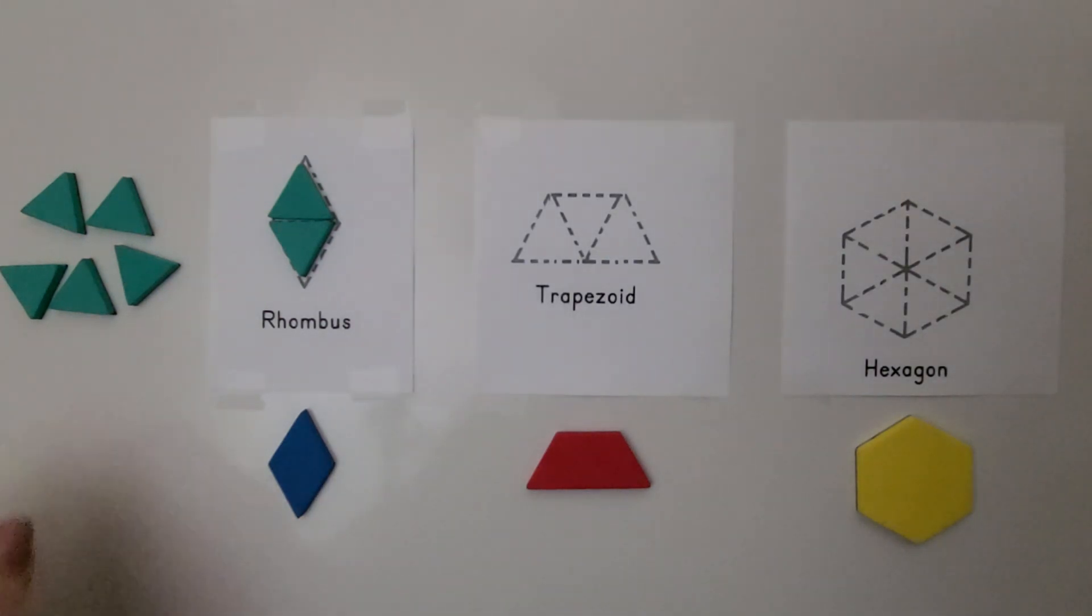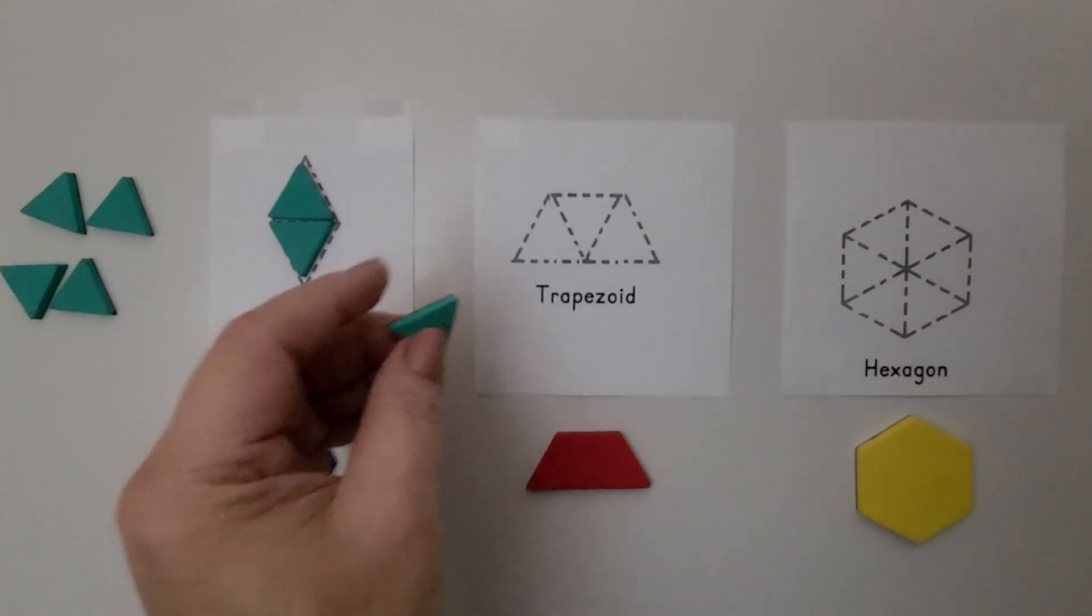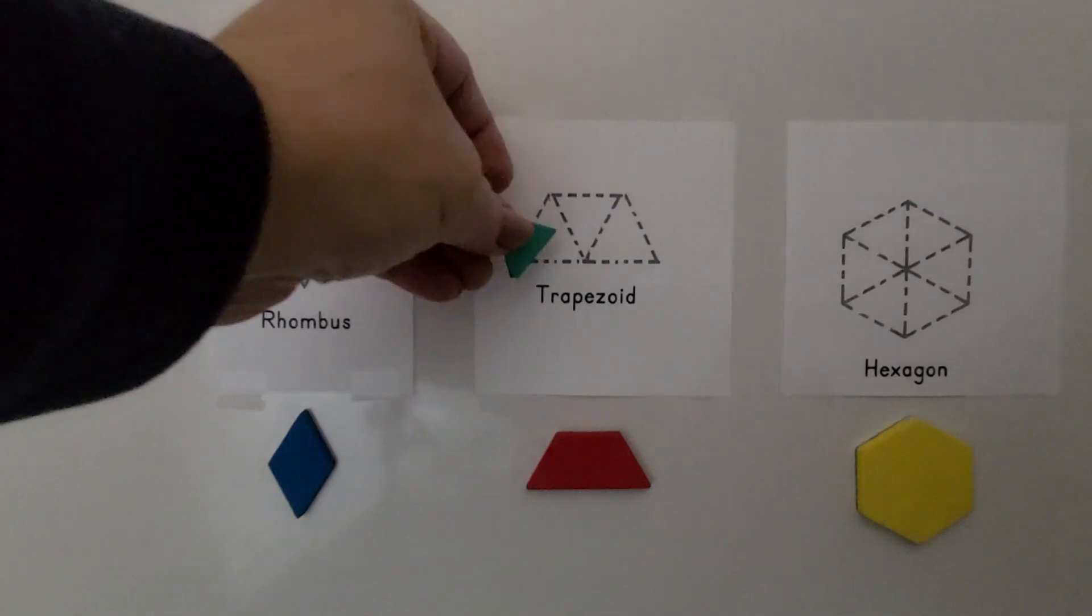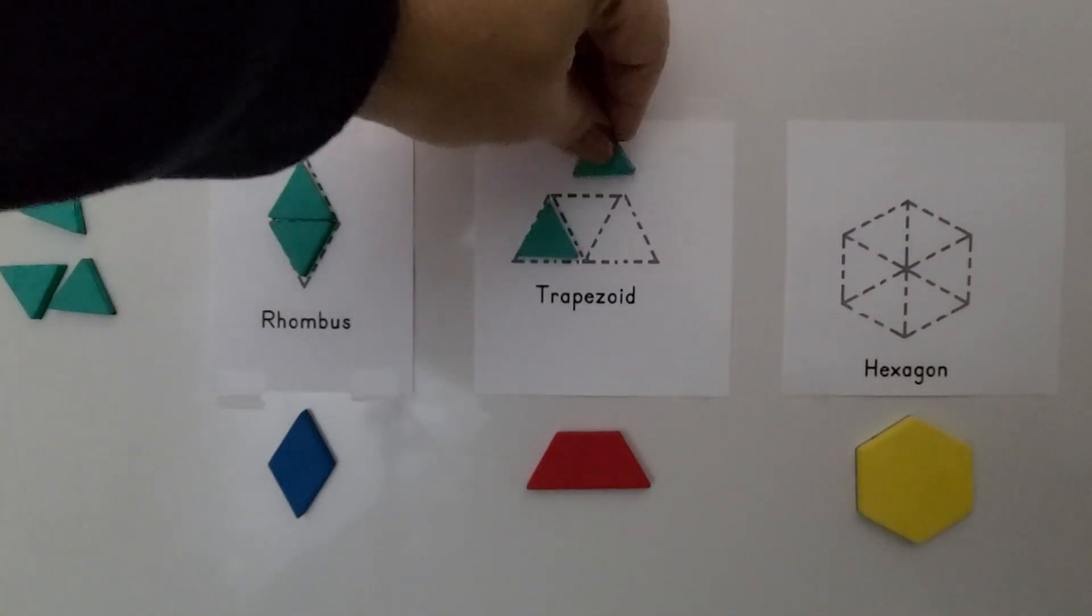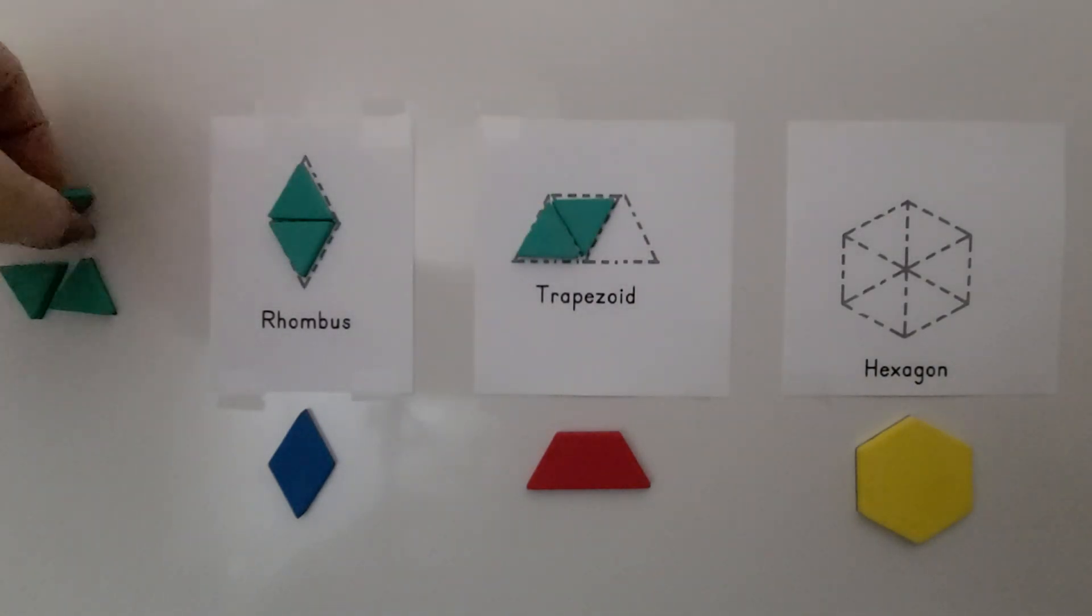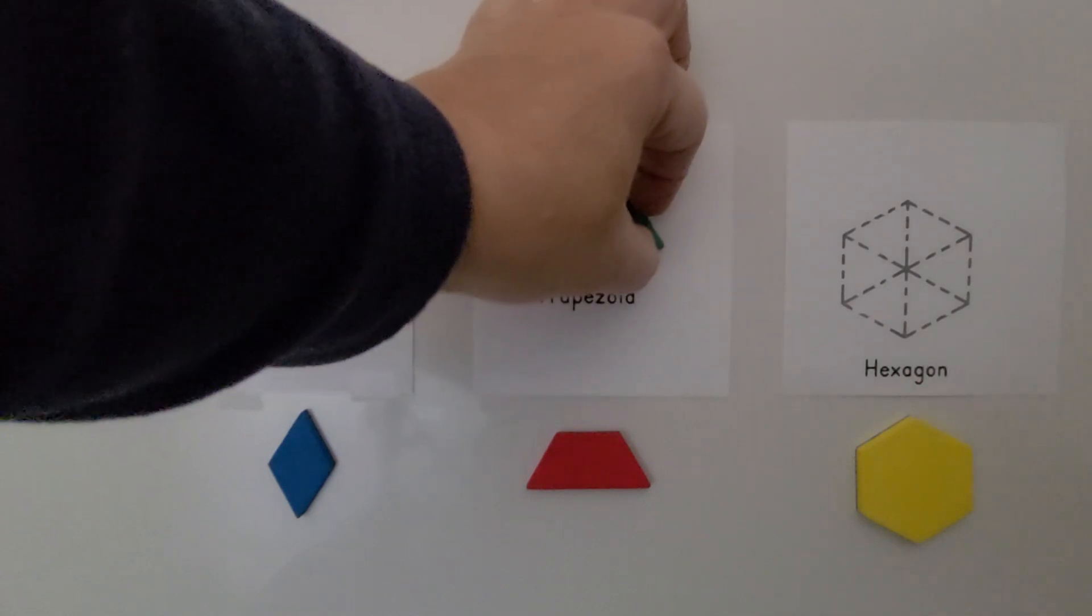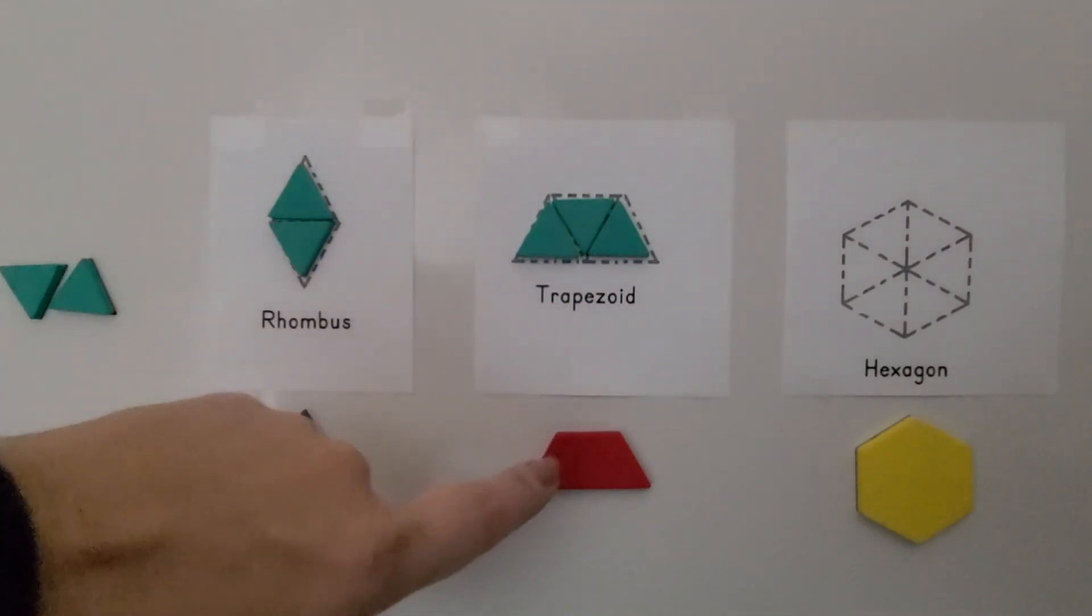And if we use three triangles, we can make a trapezoid. This shape is a trapezoid. We put a triangle here. Put another one like this, so it looks like it's upside down. We put another one like this. And putting these three triangles together, we make this trapezoid.